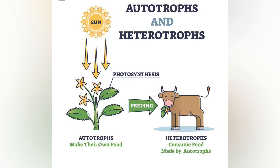The term heterotroph arose in microbiology in 1946 as part of a classification of microorganisms based on their type of nutrition. The term is now used in many fields, such as ecology, in describing the food chain.